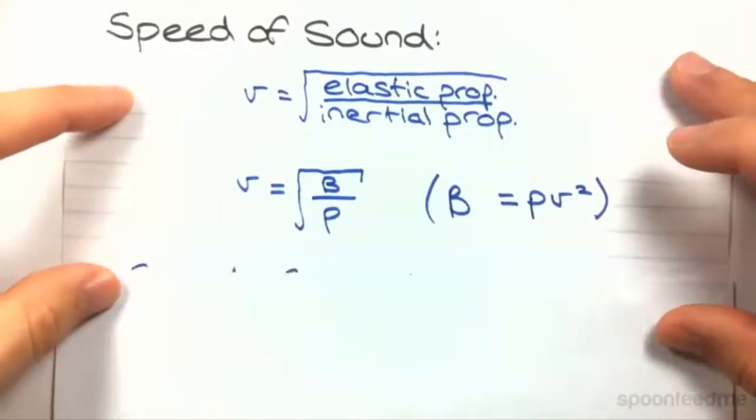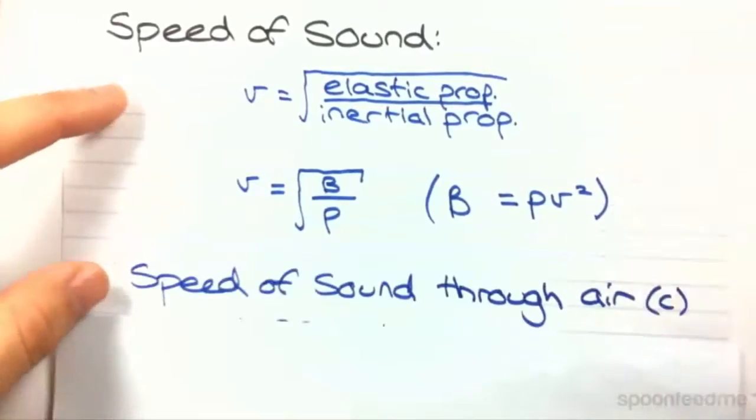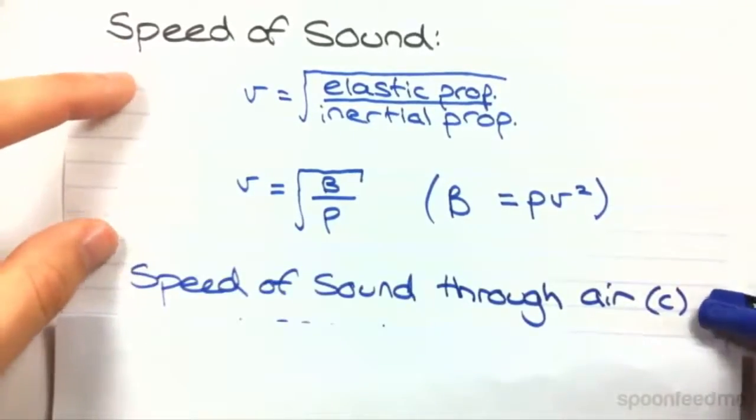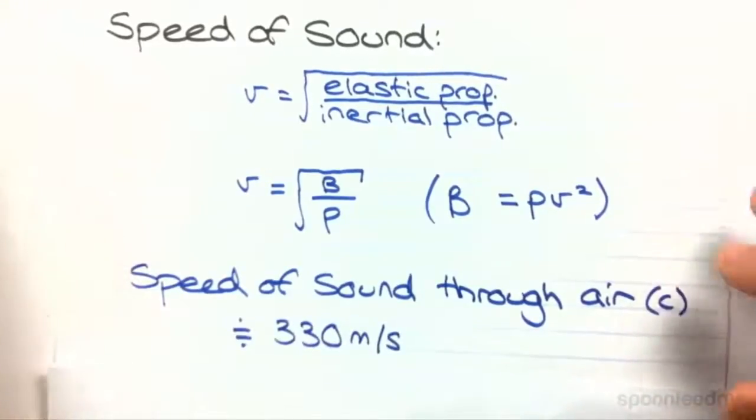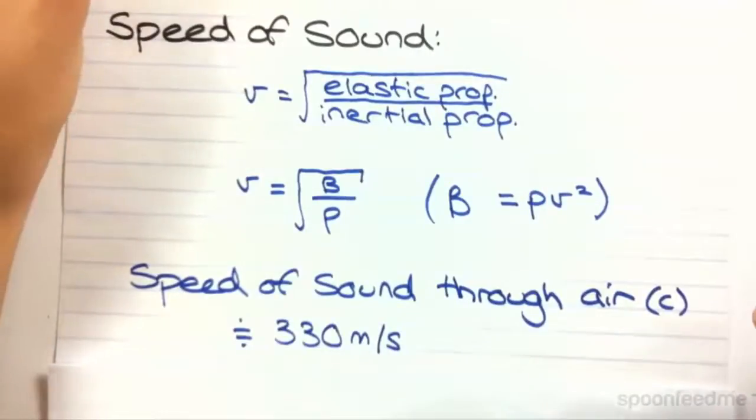A lot of the time you'll be dealing with the speed of sound through air. And it's given the variable C. And it's generally somewhere in the ballpark of 330 meters per second. I've seen it at 343. I've seen it at 330. But you'll be given that on a data sheet. So you don't need to worry about remembering that.